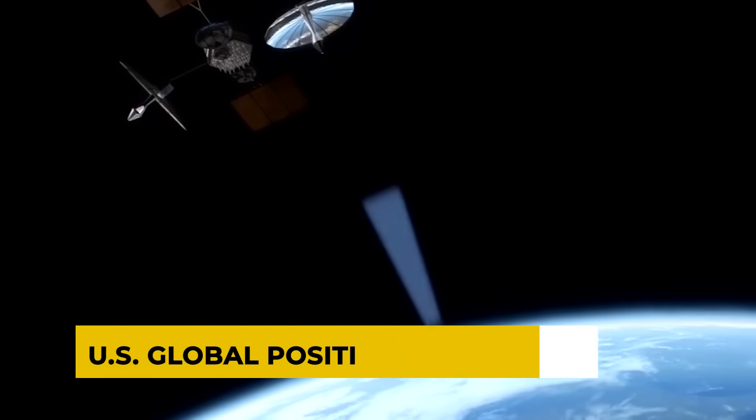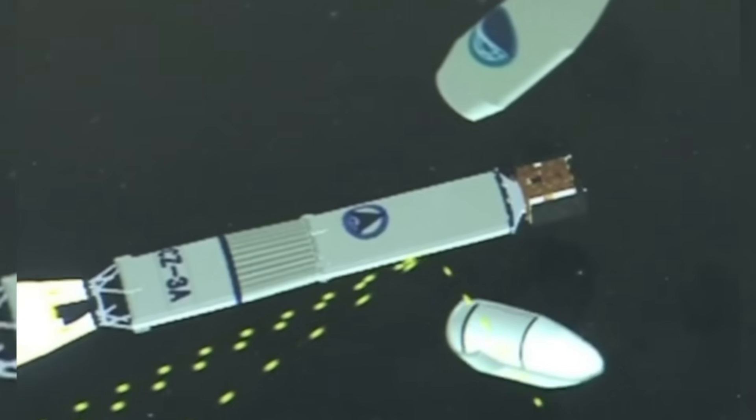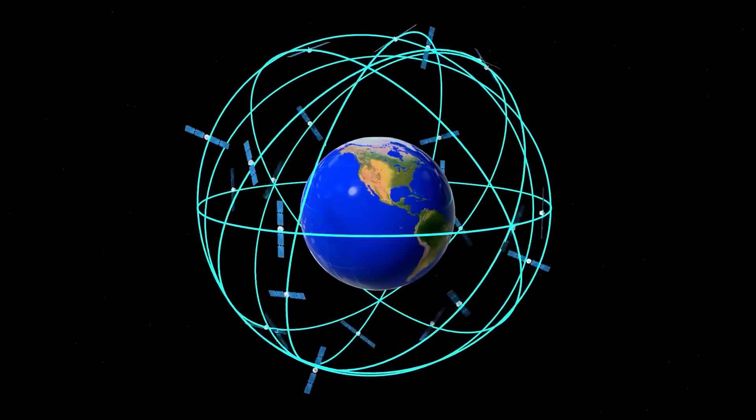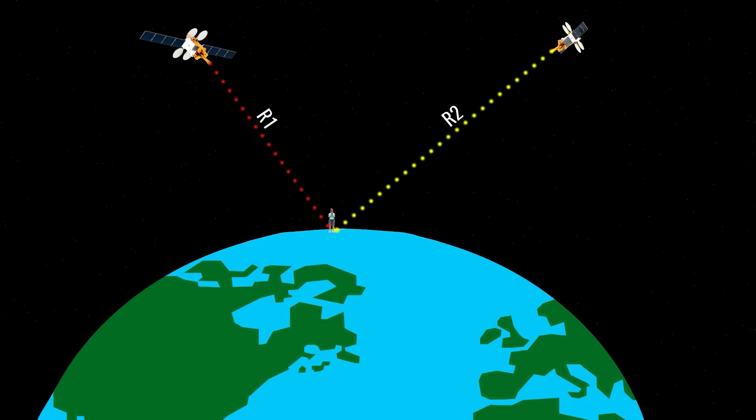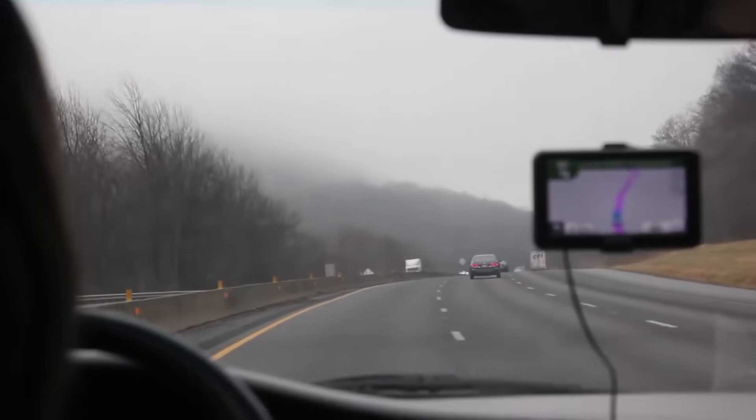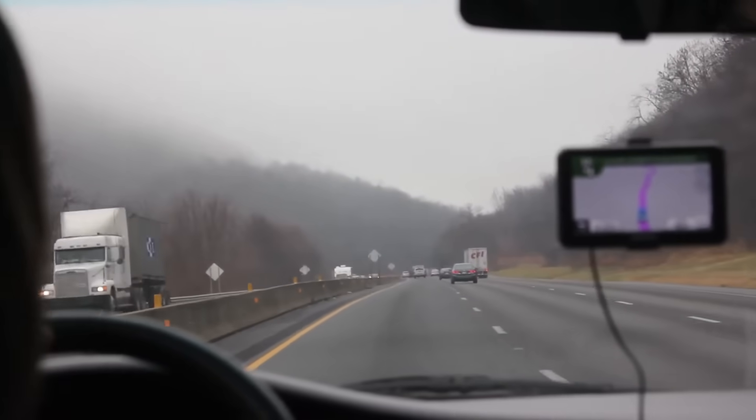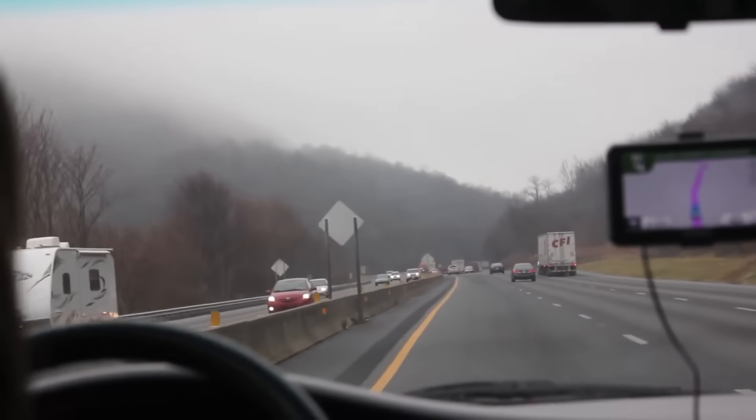The 1970s also saw the development of navigation satellites, such as the U.S. Global Positioning System, GPS. Initially designed for military use, GPS became a crucial tool for civilian navigation, from guiding travelers to helping farmers optimize crop planting. Today, GPS is an integral part of our daily lives, powering navigation apps on smartphones and supporting various industries.